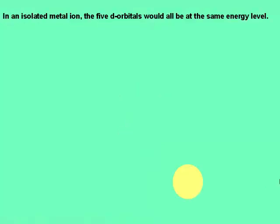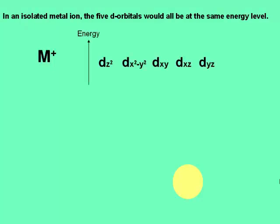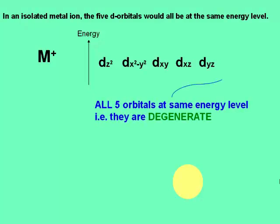In an isolated metal ion, the five d orbitals would all be at the same energy level.